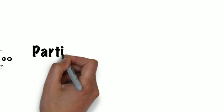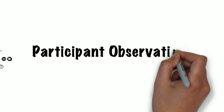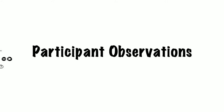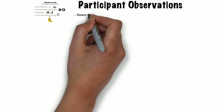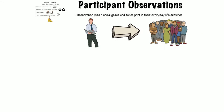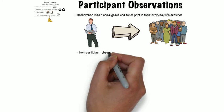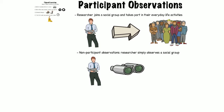Today we are going to examine participant observations as a research method used by sociologists to study society. Participant observations occur when a researcher actually takes part in the everyday life activities of a certain social group. This is different to non-participant observations, where the researcher simply observes the group without taking part in their activities.